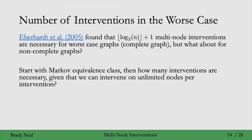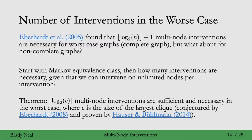The largest clique is important. If the largest clique is of size C, then the theorem states that you need the ceiling of log base 2 of C multi-node interventions to identify the graph. That number is both sufficient and necessary in the worst case, where the worst case is when we know the Markov equivalence class — the essential graph.